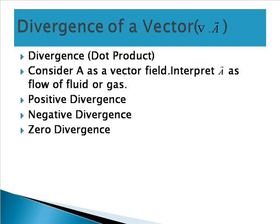The next one is divergence of a vector. Always remember divergence means dot product — 'd for dot', you can keep that in mind. So divergence means del dot A-vector. Consider A as a vector field; interpret that vector field as flow of fluid or gas, and it will be easier to understand the concept of divergence.